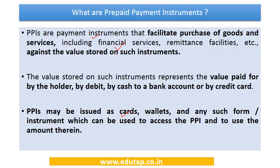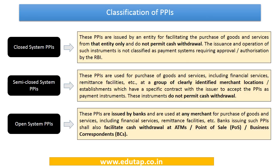The value stored on these instruments represents value which has already been paid by the holder — either by depositing cash, using a debit card, or a credit card. PPIs may be issued as cards, e-wallets, or any other form which can be used to access the PPI and use the amount therein.